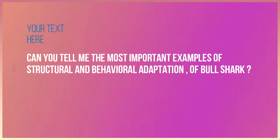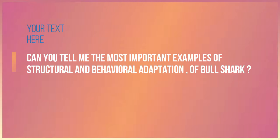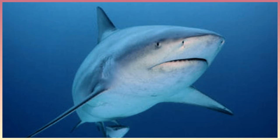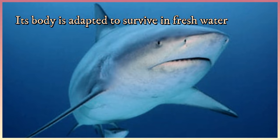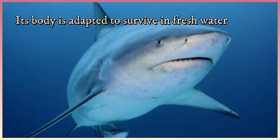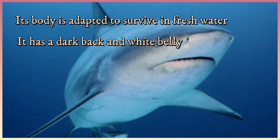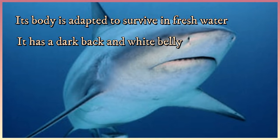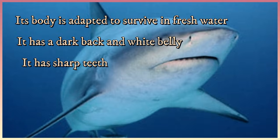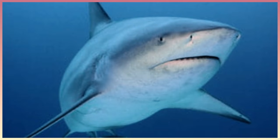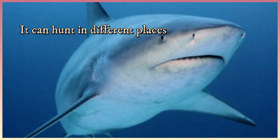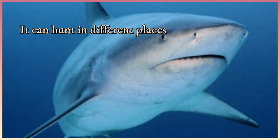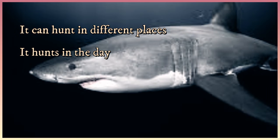Can you tell me the most important examples of structural and behavioral adaptations of the bull shark? Its body is adapted to survive in fresh water. It has a dark back and white belly. It has sharp teeth. It can hunt in different places like salt water or fresh water. It hunts in the day as well as the night. You are excellent!